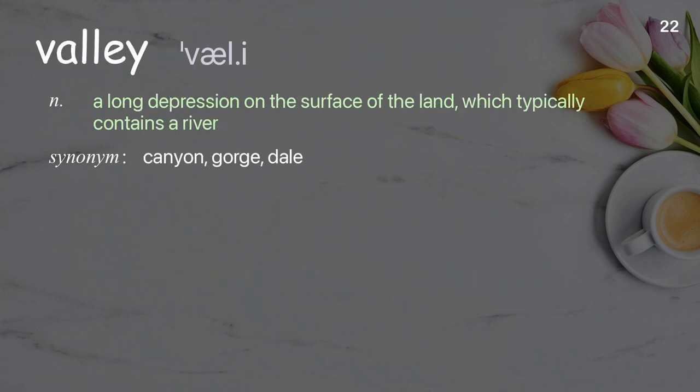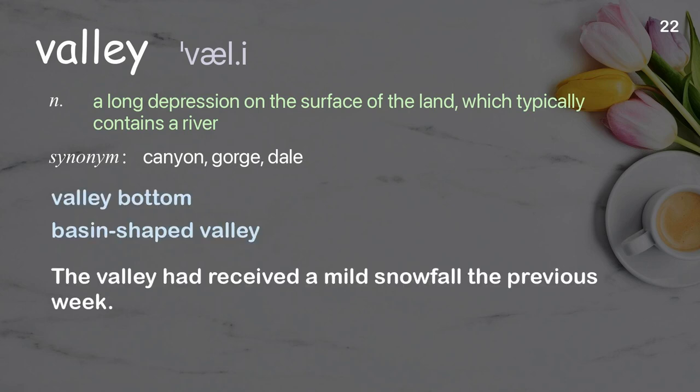Valley: a long depression on the surface of the land which typically contains a river. Examples: valley bottom, basin-shaped valley. The valley had received a mild snowfall the previous week.